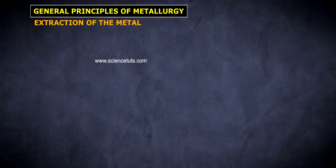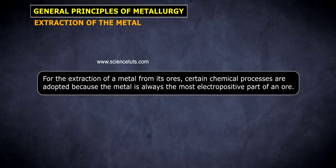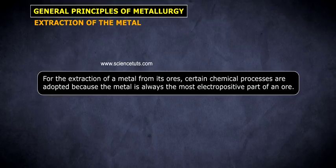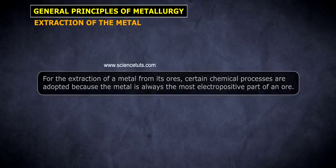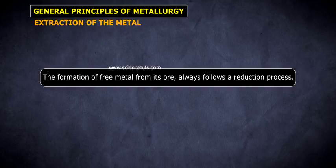Extraction of the metal. For the extraction of a metal from its ores, certain chemical processes are adopted because the metal is always the most electropositive part of an ore. The formation of free metal from its ore always follows a reduction process.